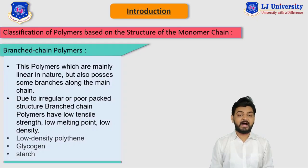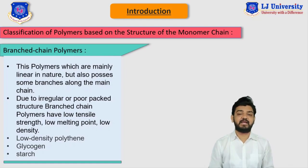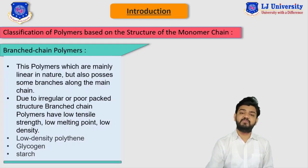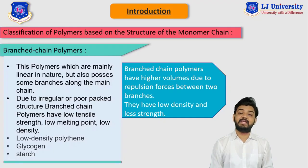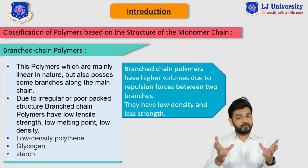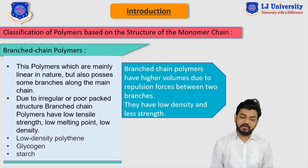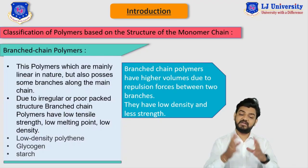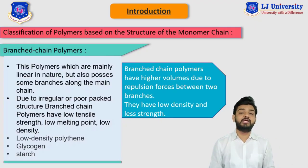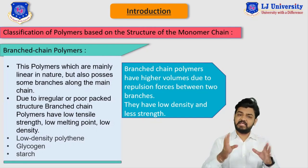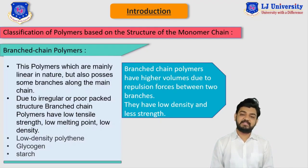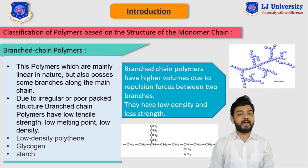Basically, their monomers are relatively apart from each other and that causes them to have low tensile strength and low melting point. Since their monomers or tiny components are relatively apart from each other, their volume will be larger. We can say that branched chain polymers have higher volume due to repulsion forces between two adjacent molecules or monomers. This is the main reason that these polymers have relatively low density and low tensile strength.